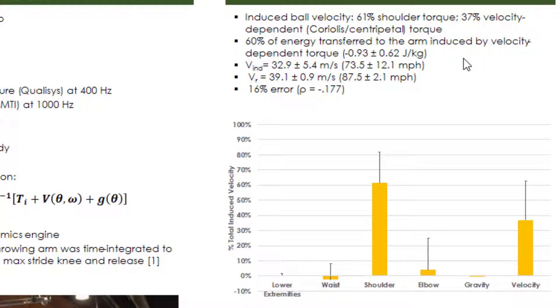Likewise, the energy that was transferred to the throwing arm was mainly induced by the velocity-dependent torque. We also found that the induced velocity underestimated the actual ball velocity by 16%, and we believe it's because of limitations in the model.